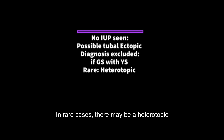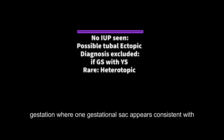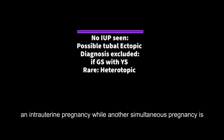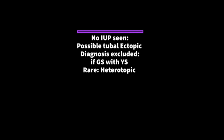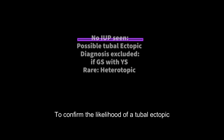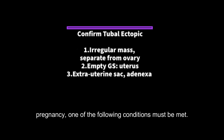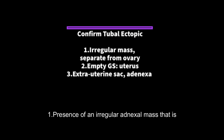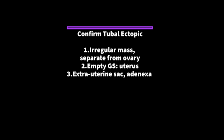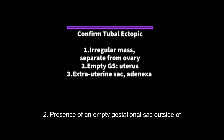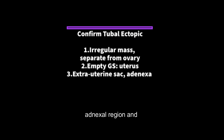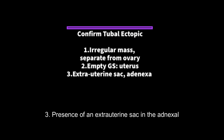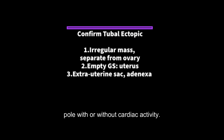In rare cases, there may be a heterotopic gestation where one gestational sac appears consistent with an intrauterine pregnancy while another simultaneous pregnancy is ectopic in location. To confirm the likelihood of a tubal ectopic pregnancy, one of the following conditions must be met: 1. Presence of an irregular adnexal mass that is separate from the ovary. 2. Presence of an empty gestational sac outside of the uterus with a hyperechoic ring in the adnexal region. 3. Presence of an extrauterine sac in the adnexal region which contains a yolk sac or fetal pole with or without cardiac activity.